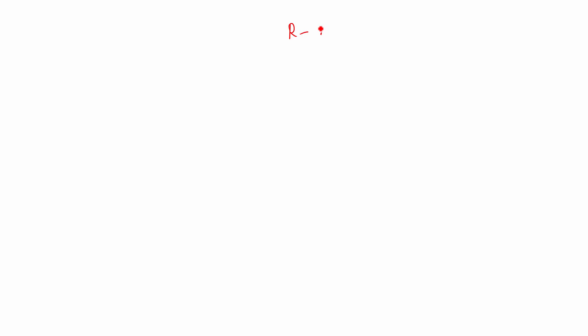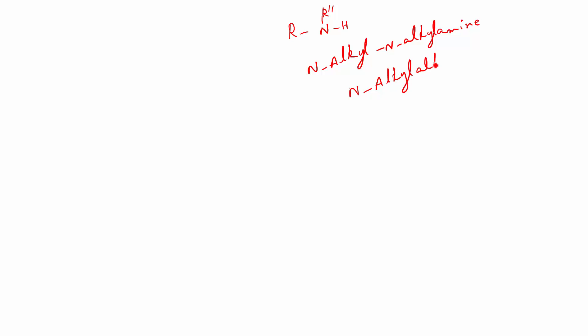Now let's go to secondary and tertiary amines. There are two ways of naming each. For a secondary amine, you can name it as N-alkyl, N-alkyl amine with the two alkyls named in alphabetical order. Or you can write it as N-alkyl alkan-amine, where the alkyl group containing the maximum number of carbon atoms or multiple bonds is taken as the parent, and the other is the N-alkyl substituent.